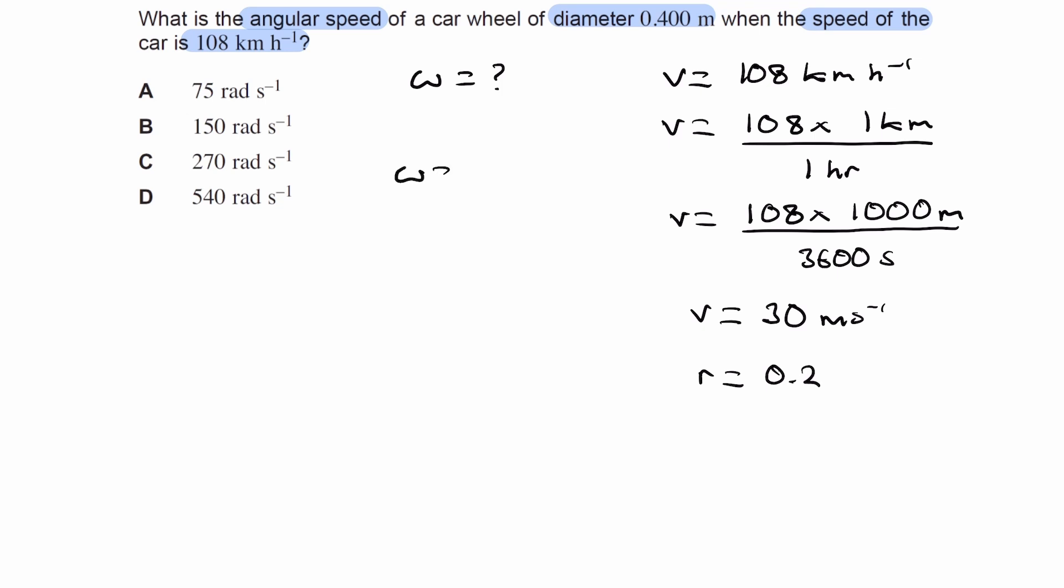So then omega is equal to v over r - this is the speed of the edge of the wheel, this is the radius of the wheel. So then put those two things in: 30 over 0.2, that gives us 150, and the units for omega would be radians per second. So that would be B.